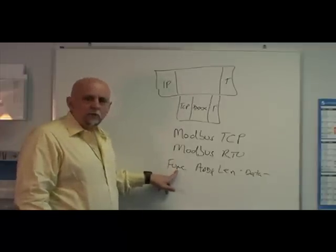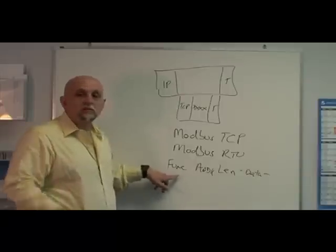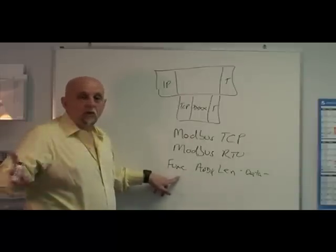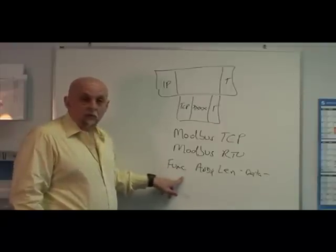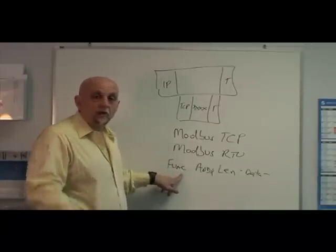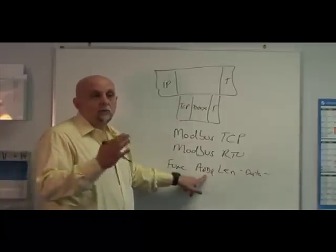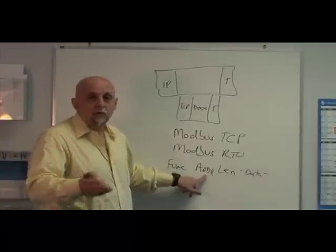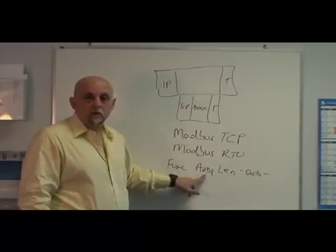So then he just sends back a message saying, well, here's an error code because I don't support that. Or he says, oh, they want to read holding registers. Oh, I've got holding registers. So they look at the address and say, man, that address is outside the bounds. I'm only supporting addresses 100 to 200. They want to read address 300. Well, can't do that so send back an error code.